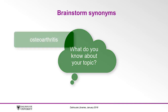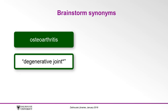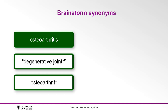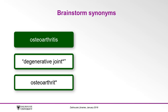In our case, synonyms for osteoarthritis include 'degenerative joint,' and we can also include other words that are variations of our term. To capture these variations, we will include the keyword 'osteoarthrit*', as the asterisk will replace different word endings to retrieve results with the words osteoarthritis as well as osteoarthritic. We will also take our 'degenerative joint' synonym and add an asterisk on the end in case some results mention 'degenerative joints.'